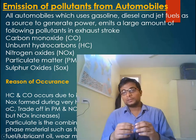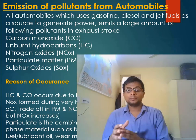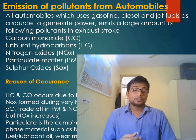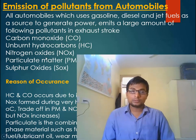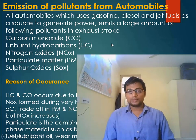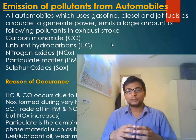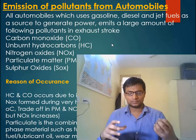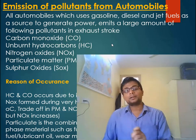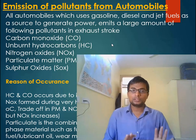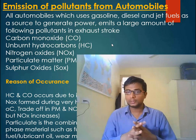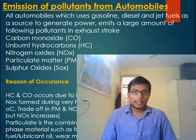Whenever we see smoke coming out from the tailpipe of any car or motorcycle, that is because of unburnt hydrocarbons. Smoke may be a combination of hundreds of types of chemicals or fumes, but the visible part of smoke is basically mostly carbon, which is also called soot, and that forms due to incomplete combustion.